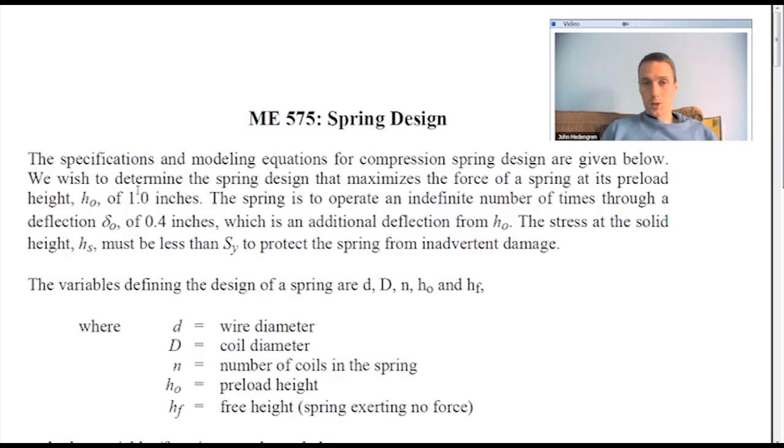So you had to combine those to get stress as a function of height. Otherwise it was mostly a matter of just finding all the different pieces and putting them in. Let's go ahead and just go through it. We have specifications and equations for this compression spring. We're going to do the optimal design of a compression spring. This is the objective: determine the spring design that maximizes the force of a spring at its preload height, H knot of one inch.